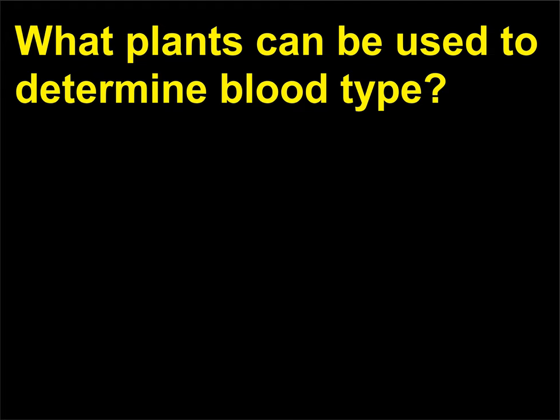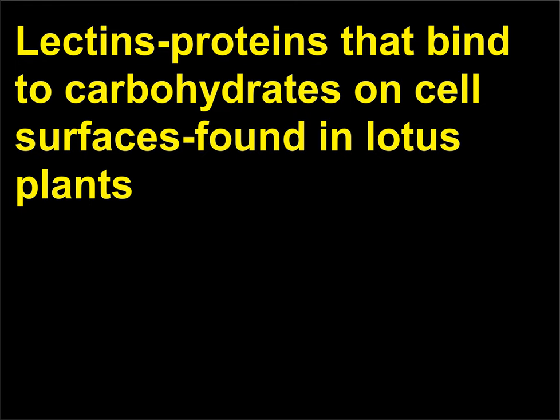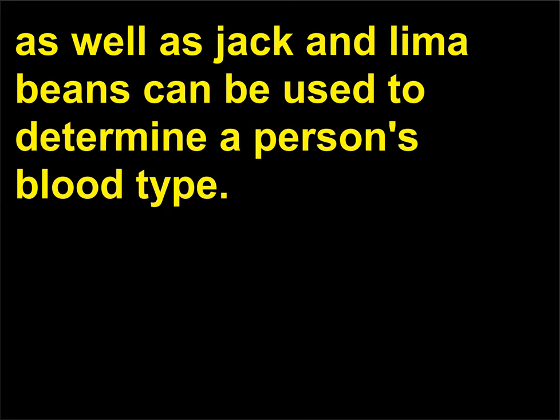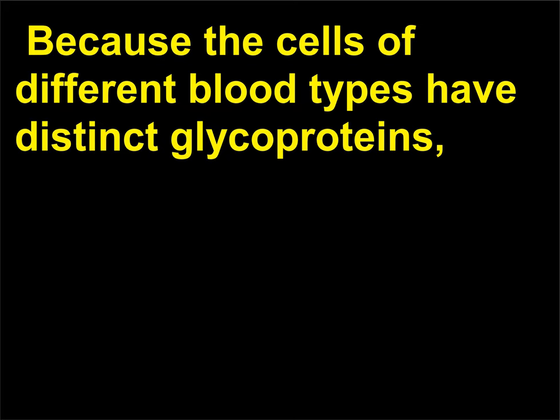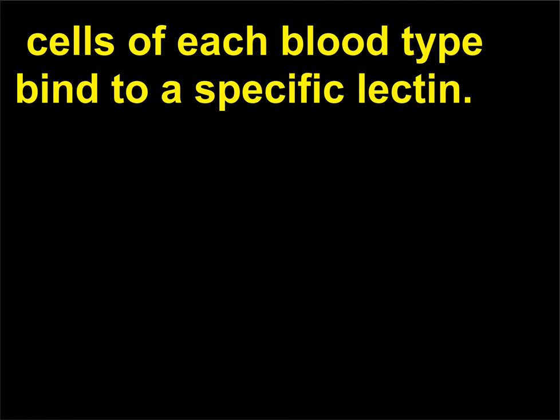What plants can be used to determine blood type? Lectins—proteins that bind to carbohydrates on cell surfaces—found in lotus plants, as well as Jack and Lima beans, can be used to determine a person's blood type. Lectins bind to glycoproteins present on the plasma membrane of red blood cells. Because the cells of different blood types have distinct glycoproteins, cells of each blood type bind to a specific lectin.